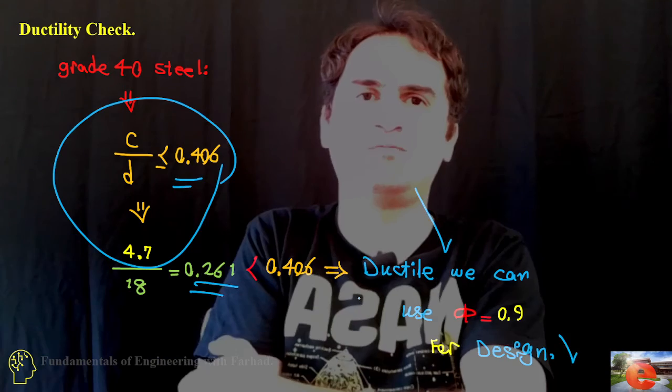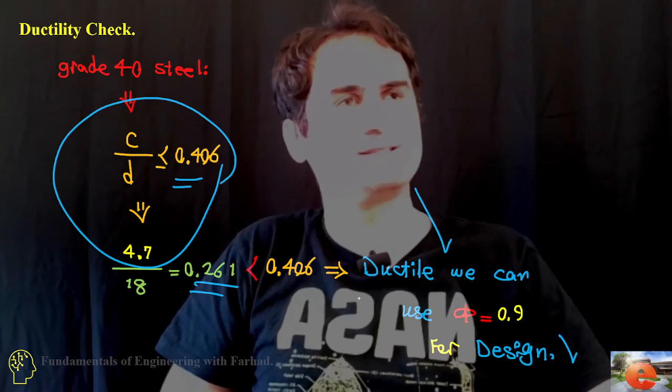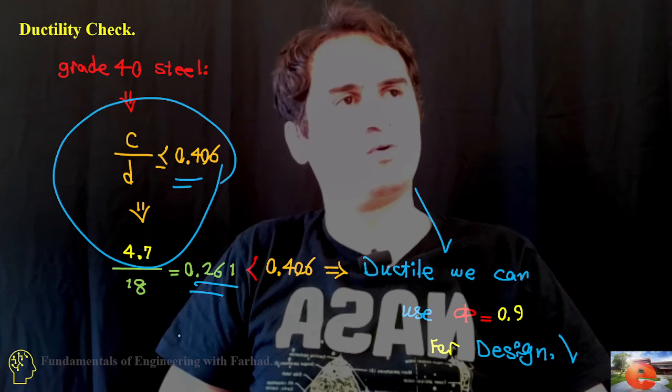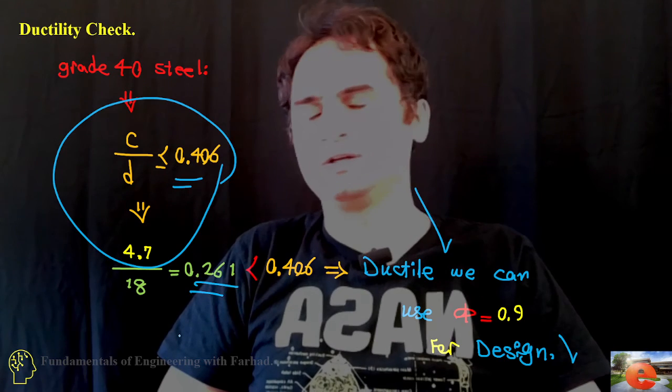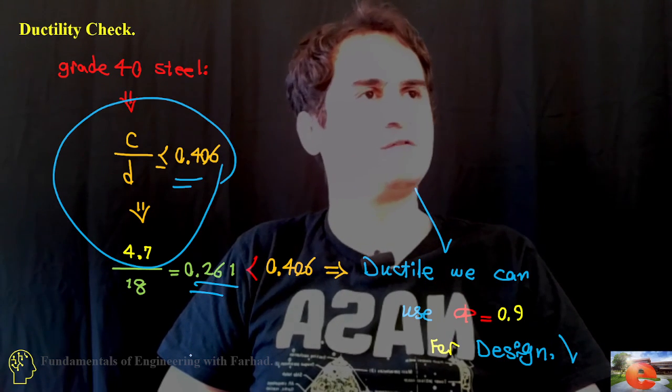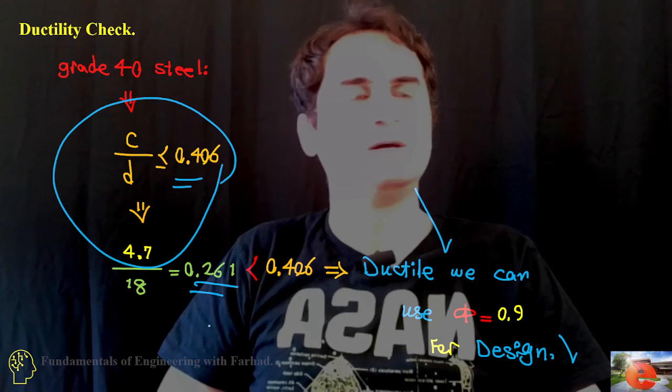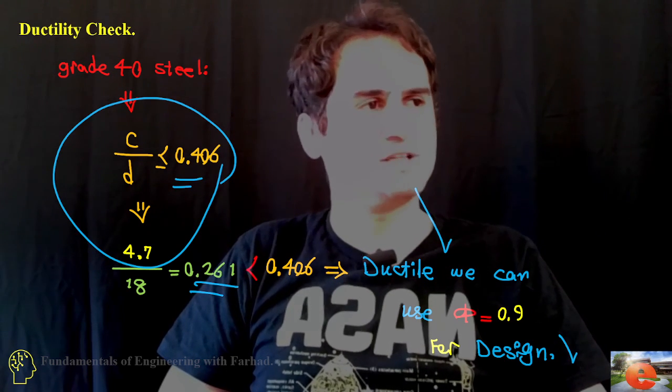The ductility check meets the requirement of using phi reduction factor of 0.9 for flexural members. Our analysis is safe and we can report nominal moment and design moment. Thank you, we'll solve more problems.